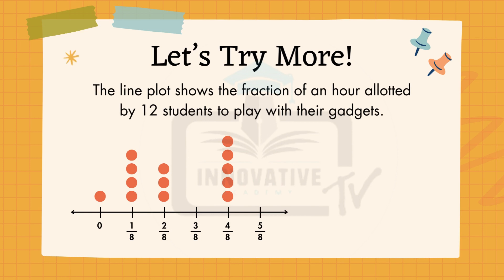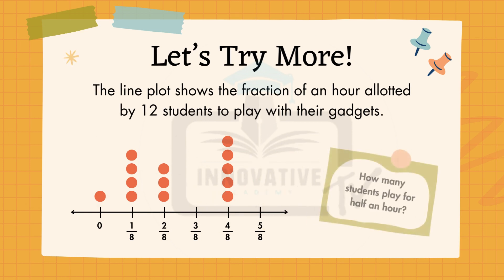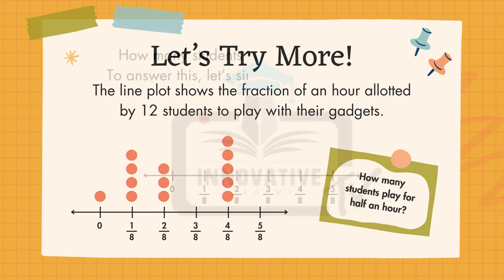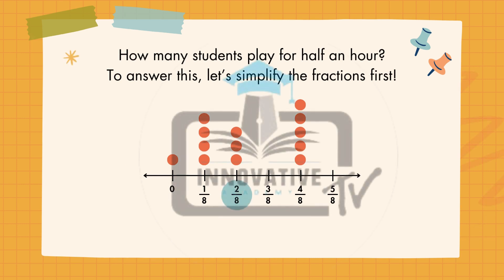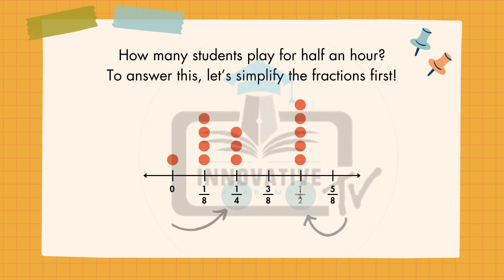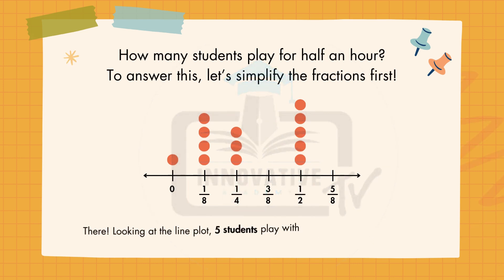Let's try more. The line plot shows the fraction of an hour allotted by 12 students to play with their gadgets. How many students play for half an hour? To answer this, let's simplify the fractions first. Looking at the line plot, 5 students play with their gadgets for half an hour.